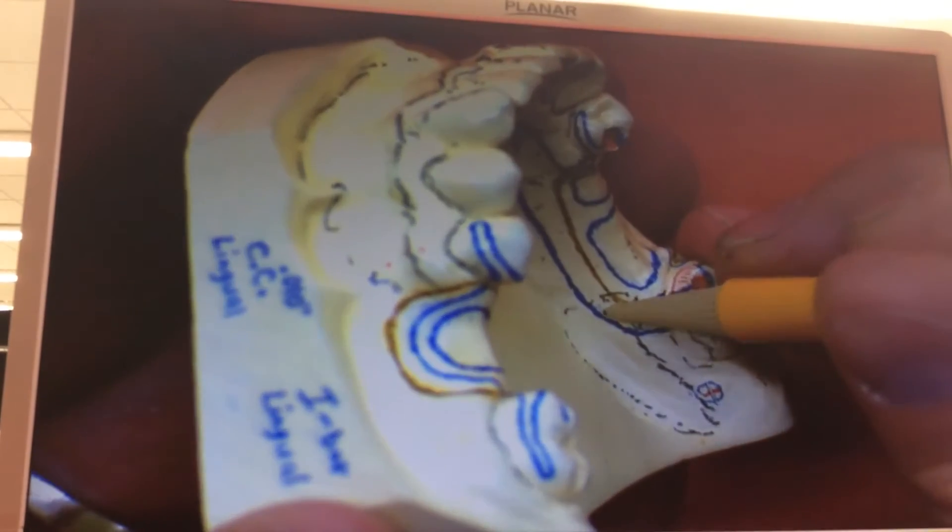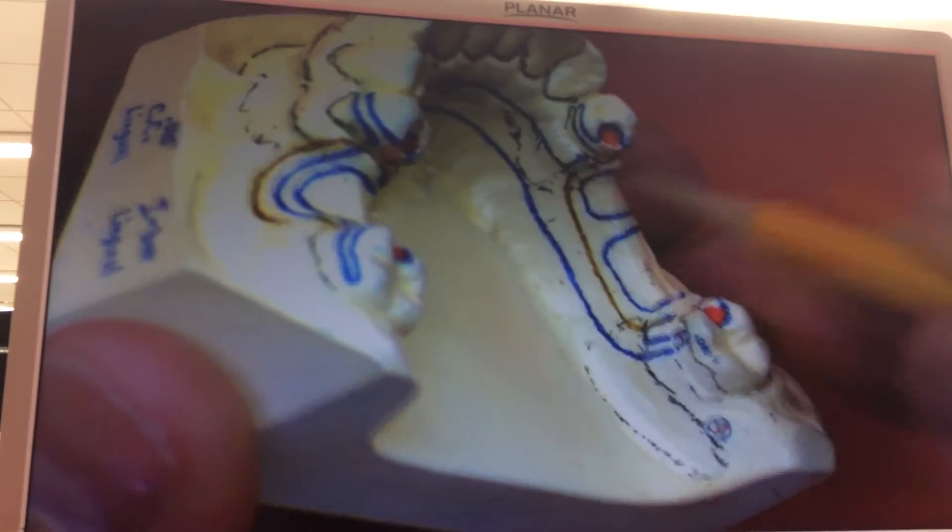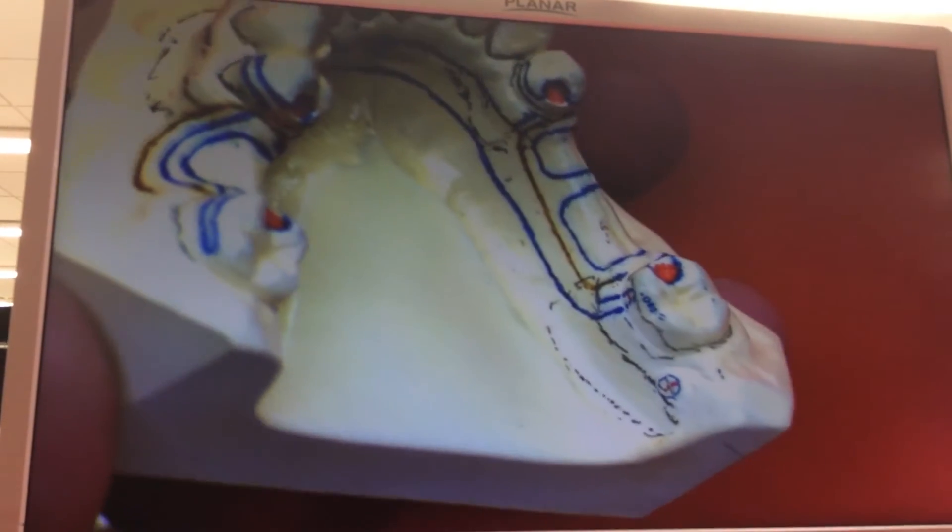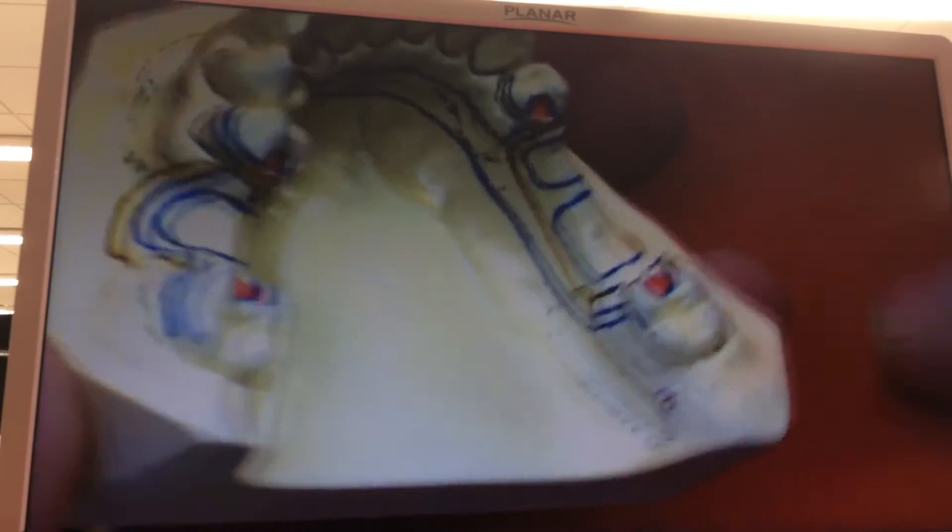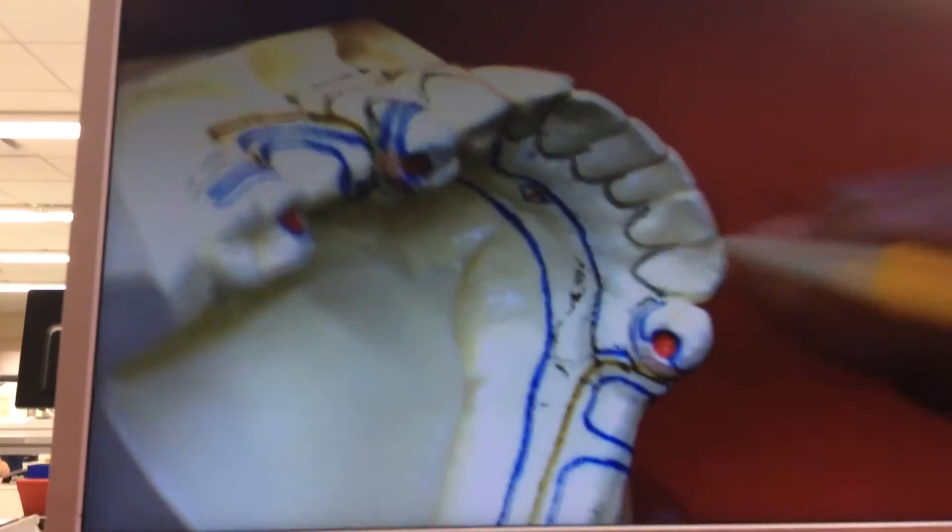This minor connector comes off from the major, and this minor connector comes off from the major. Because the definition of a minor connector is it's going to join your external components to the major connector. Comes around as a lingual bar, 4 millimeters wide, 3 millimeters off the tissue.